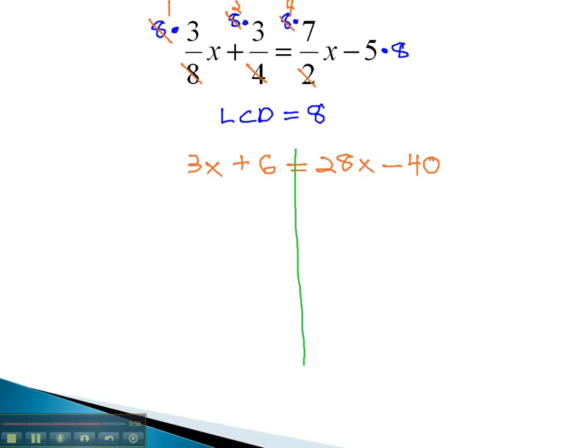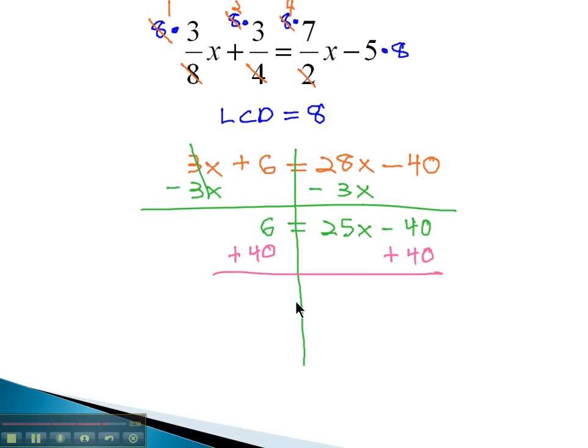Because the variable's on both sides, we want to get it on one side before we get too far into this problem. We'll subtract 3x from both sides, moving the smaller one. That's gonna give us 6 equals 25x minus 40. Continuing on then, we'll add the 40 to both sides, moving away from the x. This will give us 46 equals 25x.